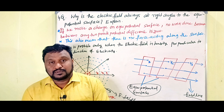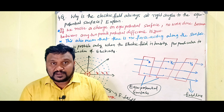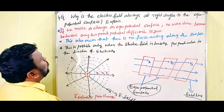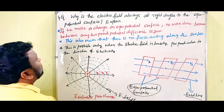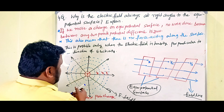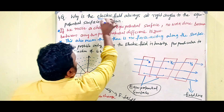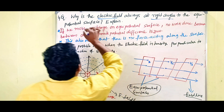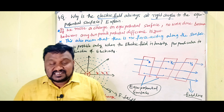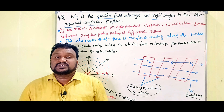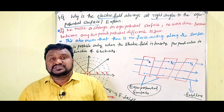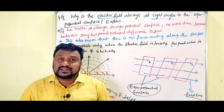Now coming to the point - what is the question and what is the answer? The question is: why is the electric field always at a right angle to the equipotential surface? Dear students, we already discussed what an equipotential surface is - it is the surface in which every point has the same potential. That is called an equipotential surface.